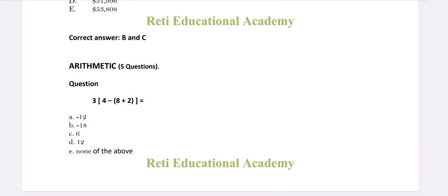In the entry test of LLB at Zabist University: three large bracket, four minus small bracket, eight plus two, bracket over, equals eight plus two, ten, four minus ten, minus six, minus six multiplied by three — it will be minus eighteen. So the right option in this question is B: minus eighteen.